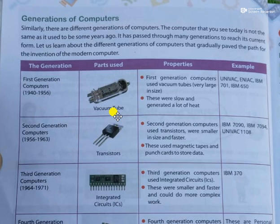These vacuum tubes were large in size and because they were built of fiberglass, they got heated very easily and as they got heated they could burst out. So it was very difficult to find out, while the processing was going on, which tube had burst. Then replacing that tube and moving ahead with the calculation was a tedious and difficult job. That's why the computers were very bulky in size and very difficult to port from one place to another — they were not portable.